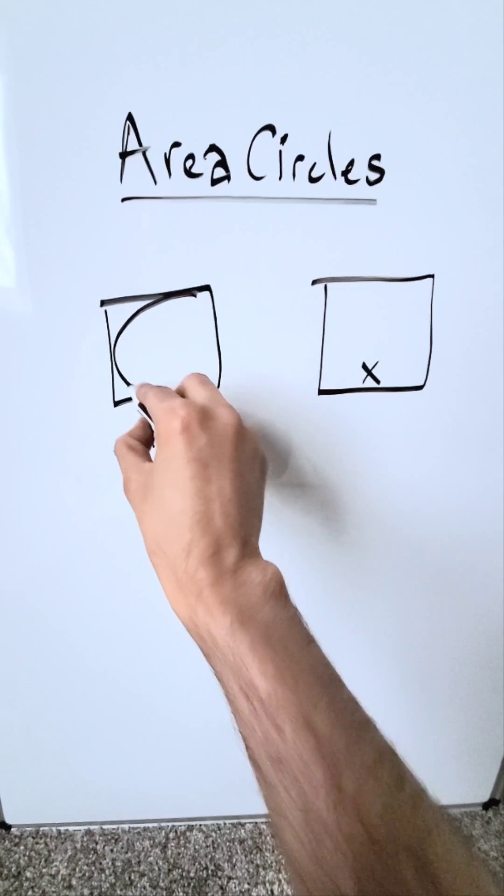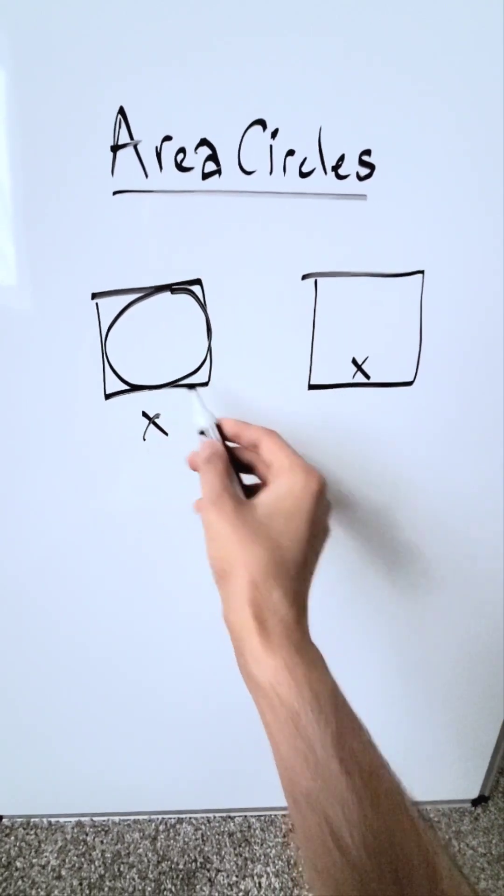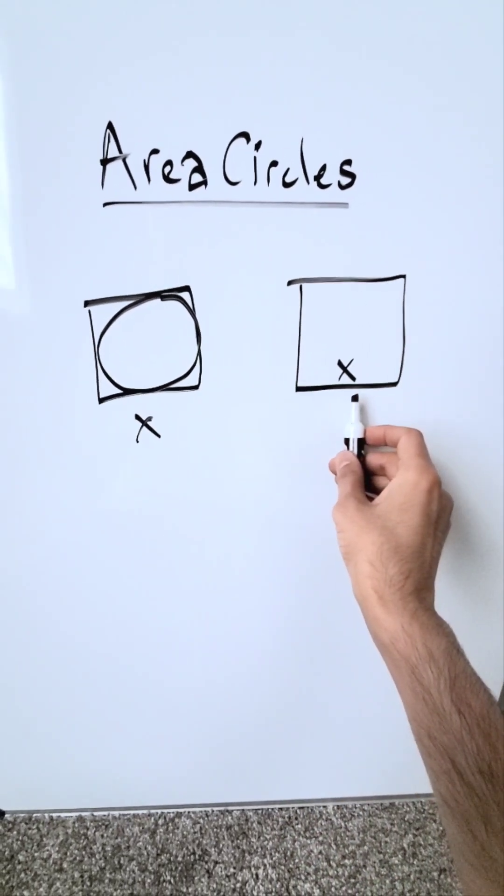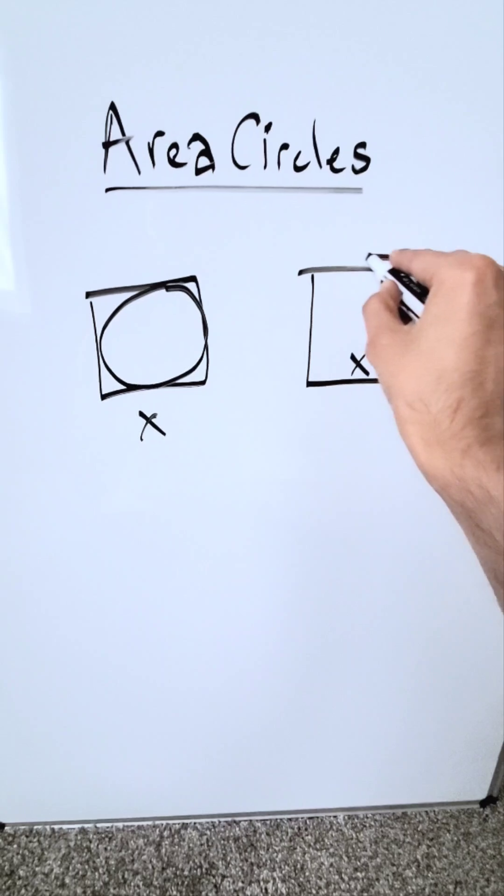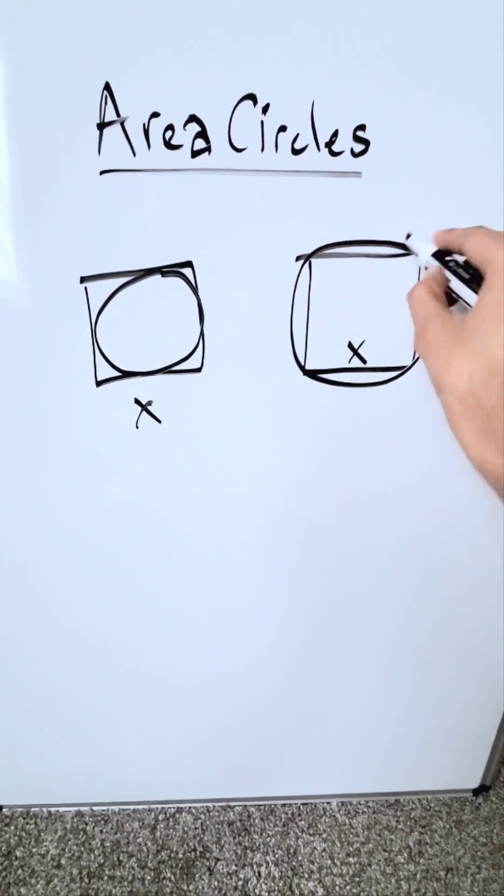In this particular case, I'm drawing a circle, but it's inscribed in that square. In this particular case, I'll draw a circle, but the square will be inscribed in that circle, and it looks something like this.